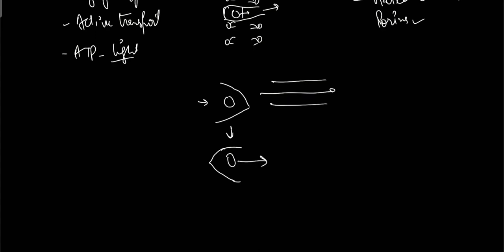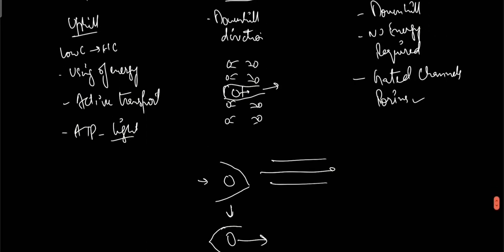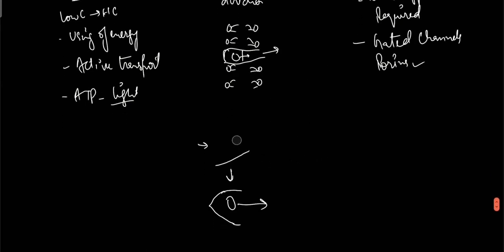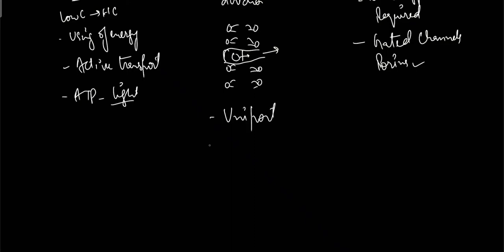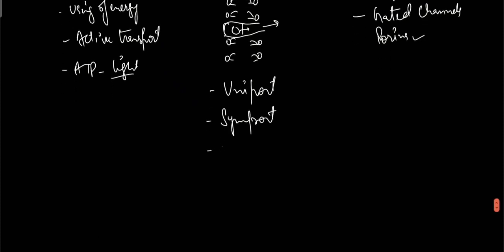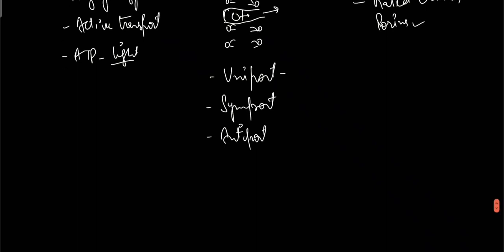Carriers can transport through three ways: uniport, symport, and antiport. Uniport is simply the transport process in which a single molecule is transferred from high concentration to lower concentration through the transport membrane.